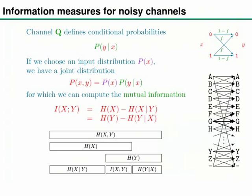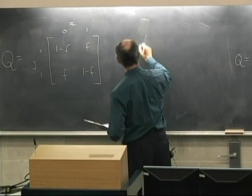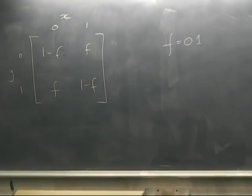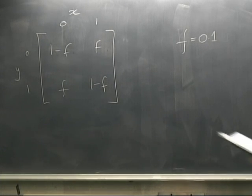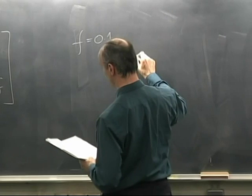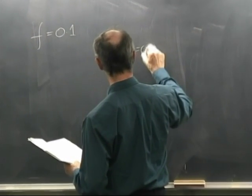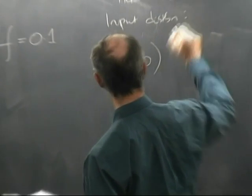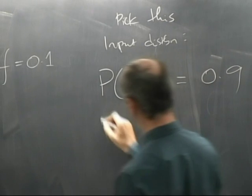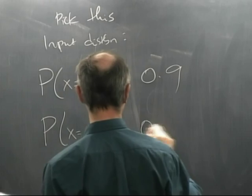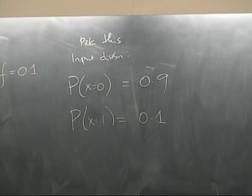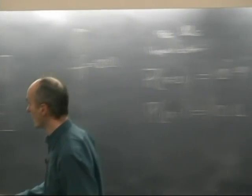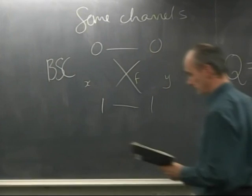We'll pick a specific channel with flip probability f = 0.1, and an input distribution where the probability of a zero is 0.9 and the probability of a one is 0.1. So we're sending a biased coin sequence — lots of zeros and a few ones — into this channel, and observing the outputs Y.